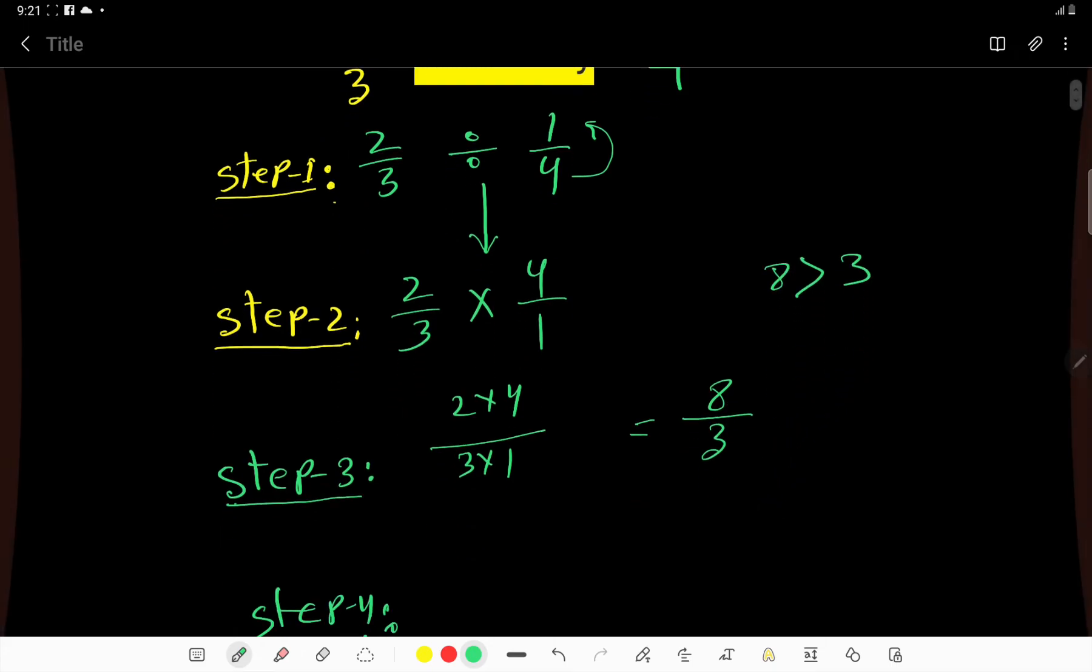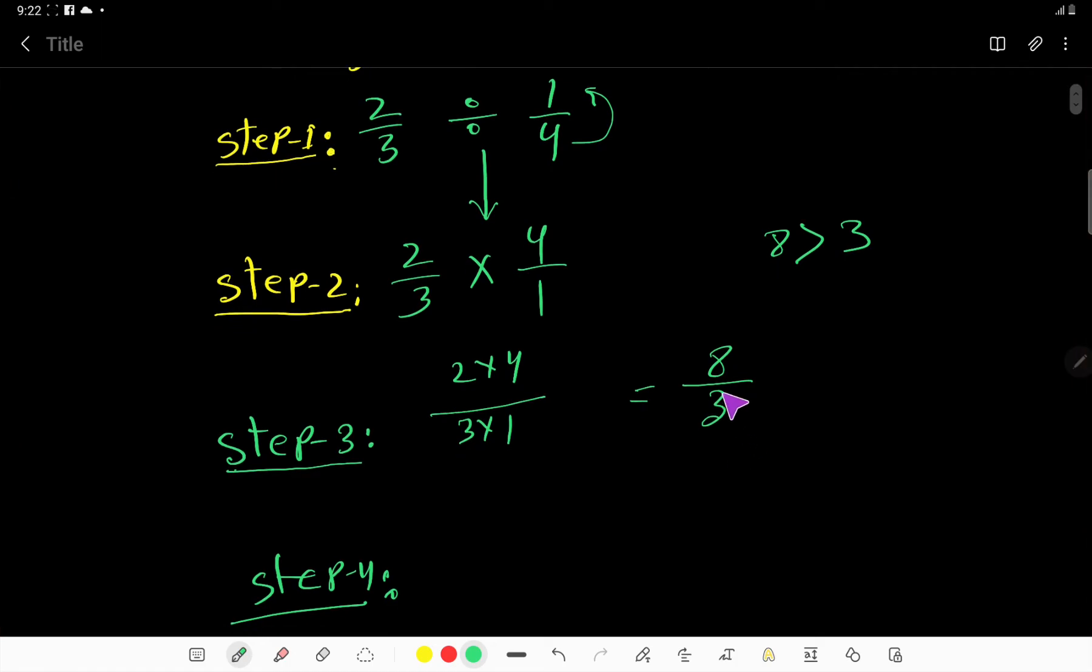This is an improper fraction, so we'll convert this improper fraction to mixed number. We have to divide 8 by 3. 3 goes into 8 two times, 2 times 3 equals 6.